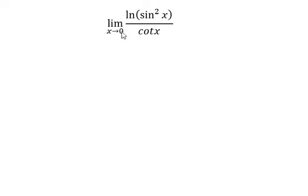When x approaches zero, we put zero in here. So we have sine of zero. We have zero, ln of zero, we have negative infinity.